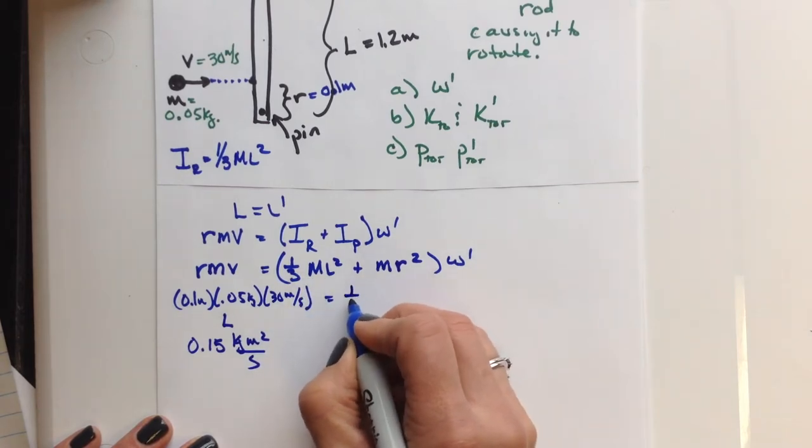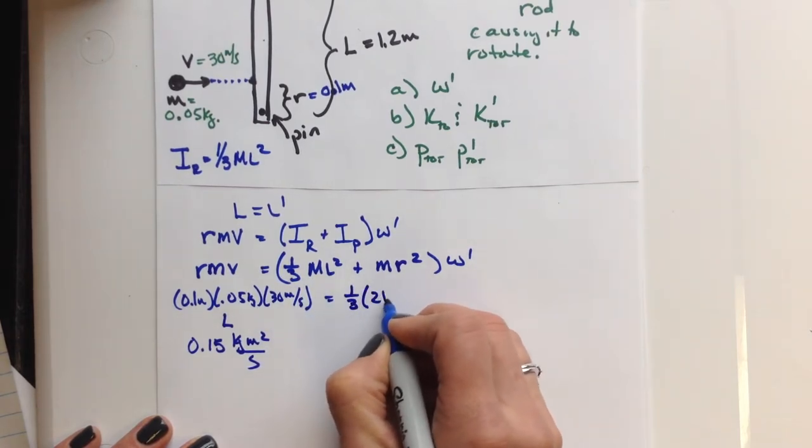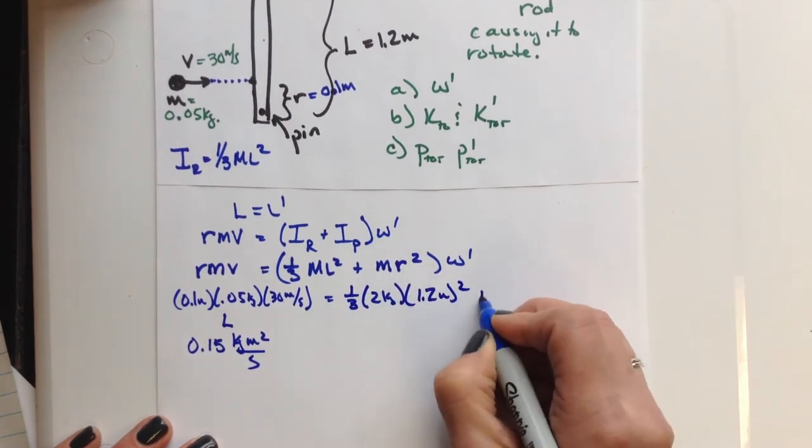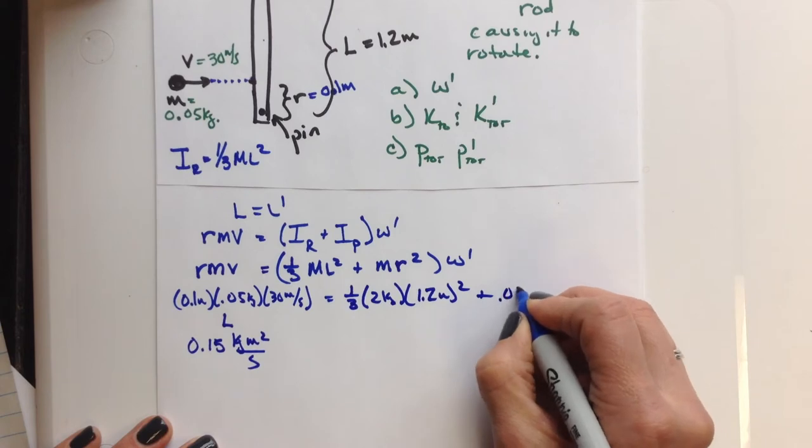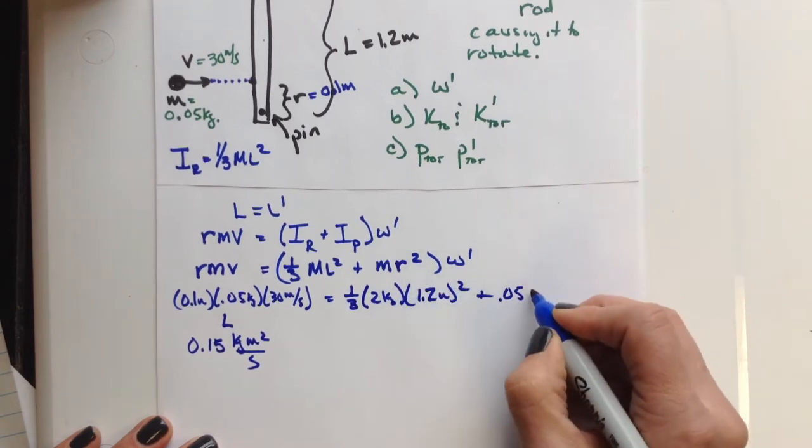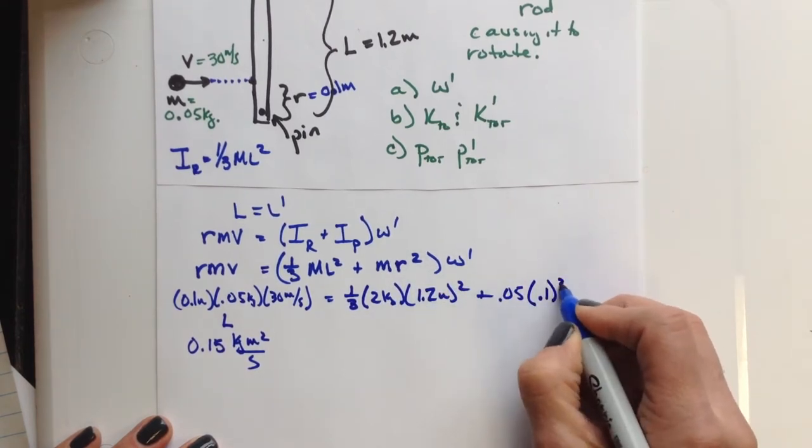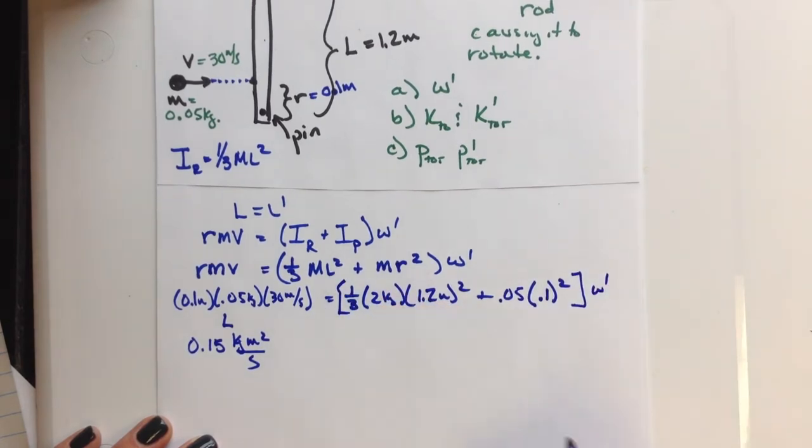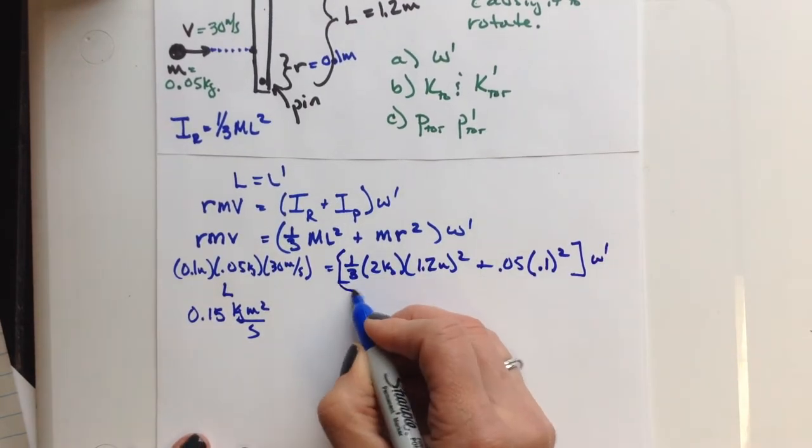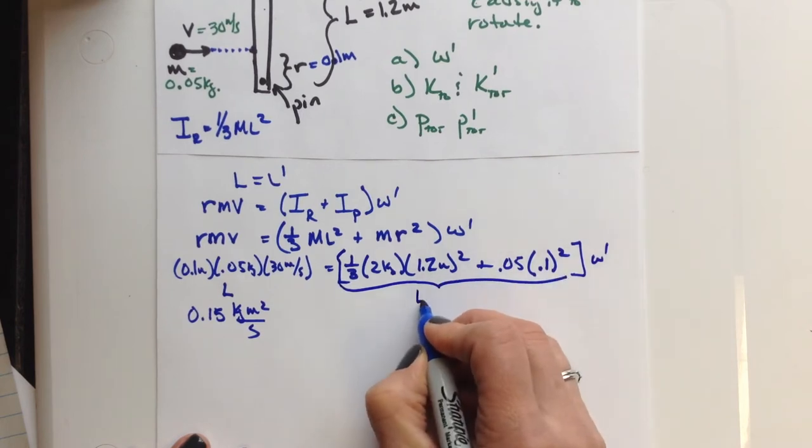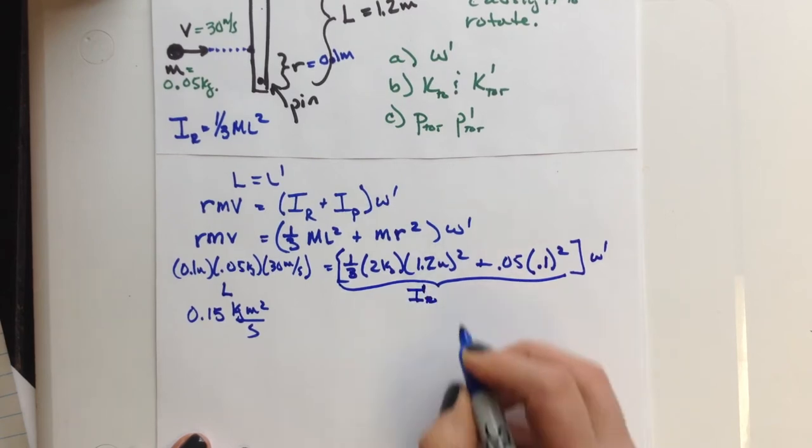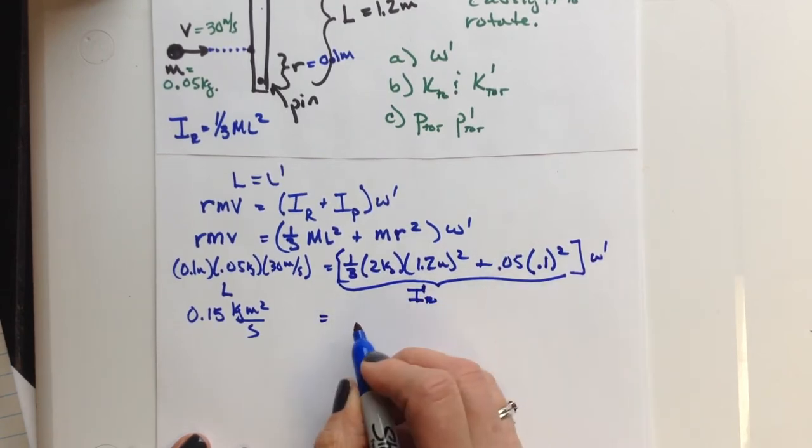So now we'll start substituting this. So you've got one-third times 2 kg times 1.2 m squared plus the little mass is 0.05. Little r squared is going to be 0.1 squared. And then we have our final angular velocity. This whole piece right here is going to be our total rotational inertia before. So after I just plug those numbers in, and I'll need this number a little bit later. That's why I'm kind of separating it out.